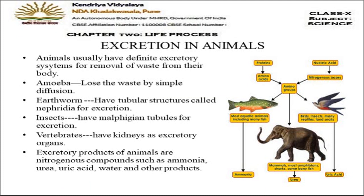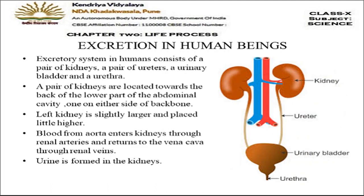Different animals have different processes of excretion. In amoeba, excretion is simply by diffusion. Earthworms have special structures called nephridia. Insects have Malpighian tubes for excretion. Vertebrates, including humans, have kidneys as excretory organs. Excretory products include all nitrogen-containing compounds such as ammonia, urea, uric acid, water, and other products which have to be removed from the body.